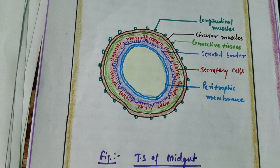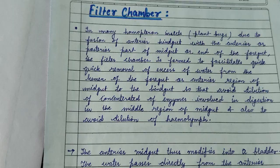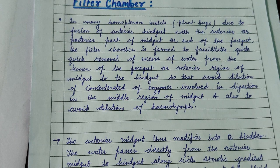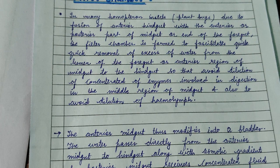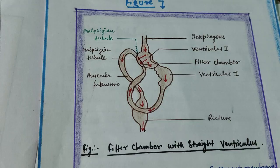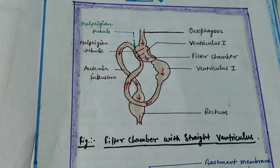In the midgut, there is a filter chamber, which is a fusion of the anterior hindgut with the posterior part of the midgut or end of the foregut. The filter chamber facilitates quick removal of excess water from the lumen of the foregut or anterior region of the midgut to the hindgut, to avoid dilution of the concentrated enzymes involved in digestion in the middle region of the midgut, and also to avoid dilution of the hemolymph. The midgut is also known as the ventriculus.